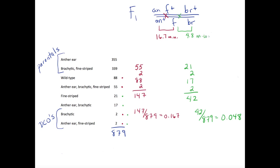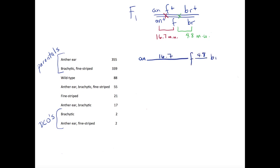Notice that the double crossover phenotypes are counted in each of our map distance calculations, since they have a crossover in each region of the chromosome. Let's redraw our map of this region of the chromosome to reflect these distances. AN is 16.7 map units from F, which is 4.8 map units from BR.